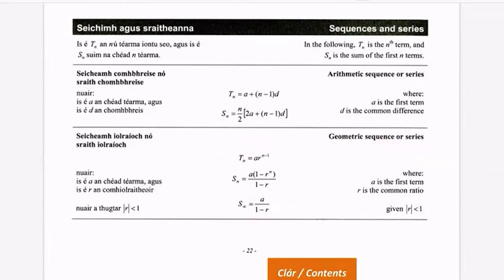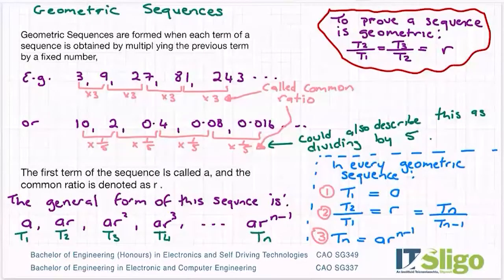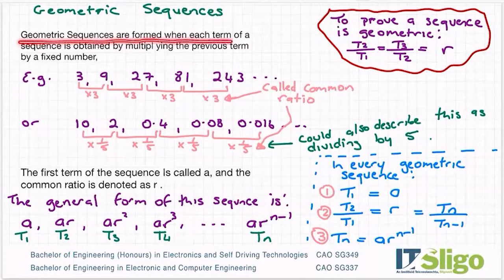I'll be referring back to these over the next few classes as we work our way down through using the formulae. So a geometric sequence, what is that? The geometric sequences are formed when each term of a sequence is obtained by multiplying the previous term by a fixed number. That is the formal definition of a geometric sequence.